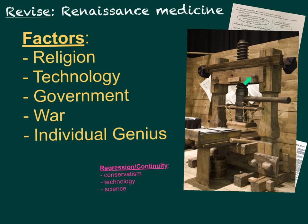They'd then flap that back down, turn the huge screw down on top of the book to press it onto the metal letters with ink on them. Then they'd unscrew it, open it up, take the piece of paper out, put the next piece of paper in, and repeat. They'd print all the page ones first, then all the page twos, all the page threes, and so on.